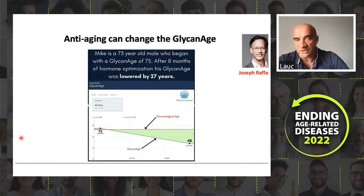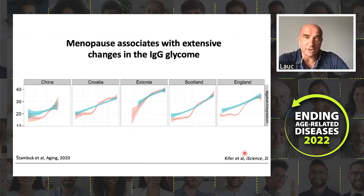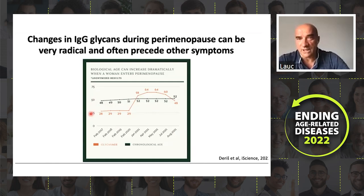We also have famous researchers like Tim Spector, who did an intervention and improved his glycan age by 11 years in a couple of months — we even recorded an Instagram Live about it. We also know that menopause is associated with very extensive changes in IgG glycome. There is a rapid acceleration of glycan aging around the period of menopause. At the individual level, it often looks like someone who has very favorable glycan age, and then the glycans go haywire — this particular lady aged 35 years in less than a year. Then with optimal therapy, it can be reverted in a favorable direction.